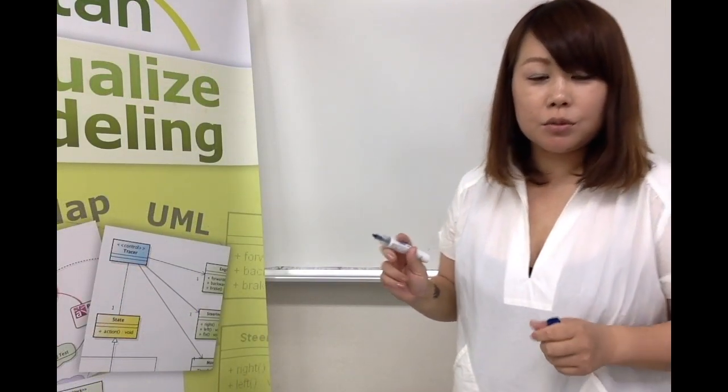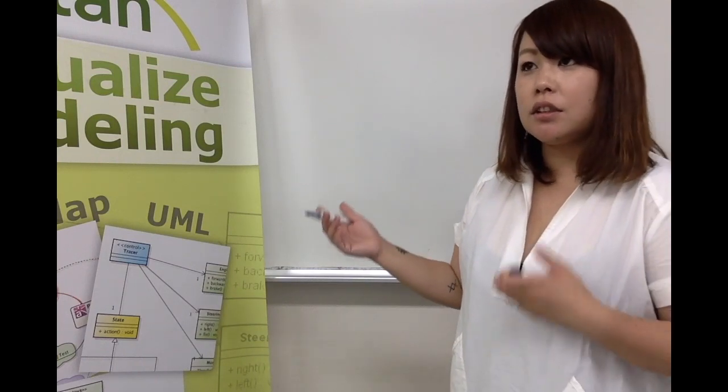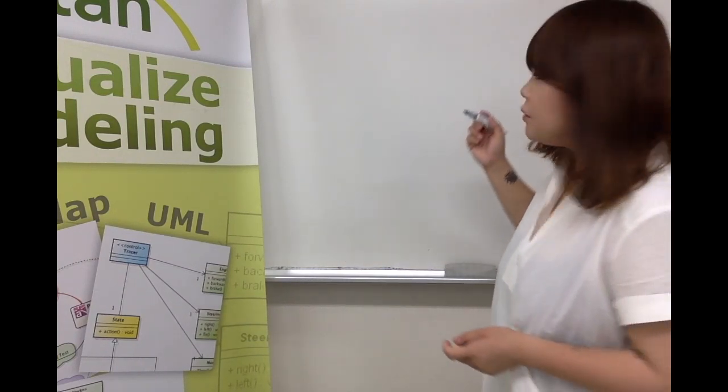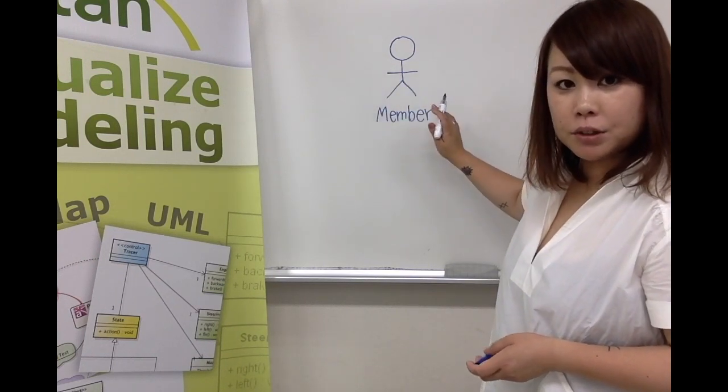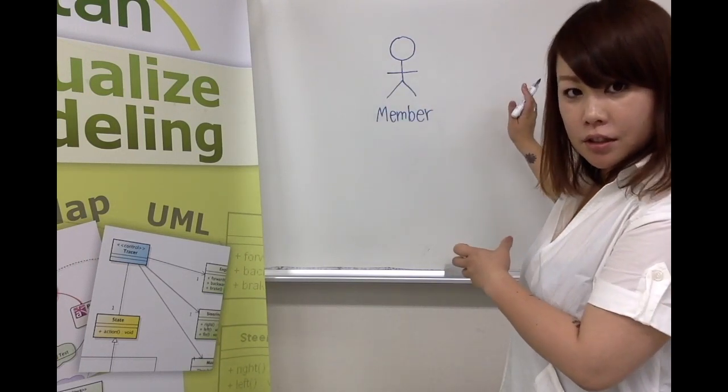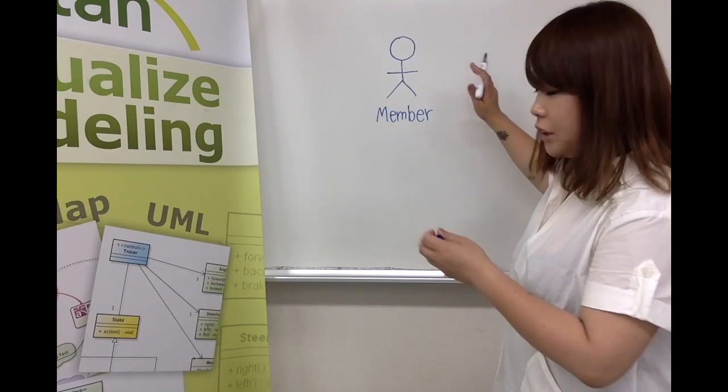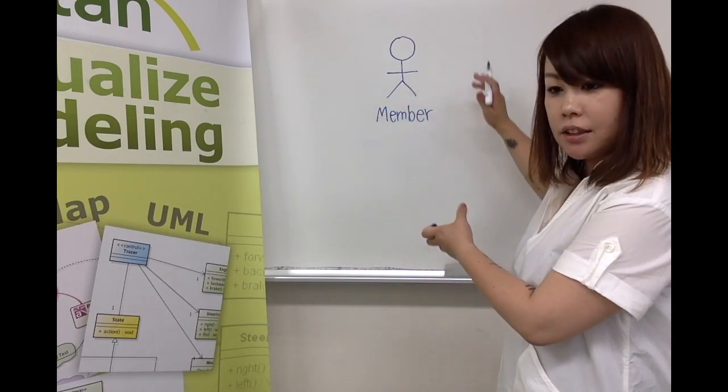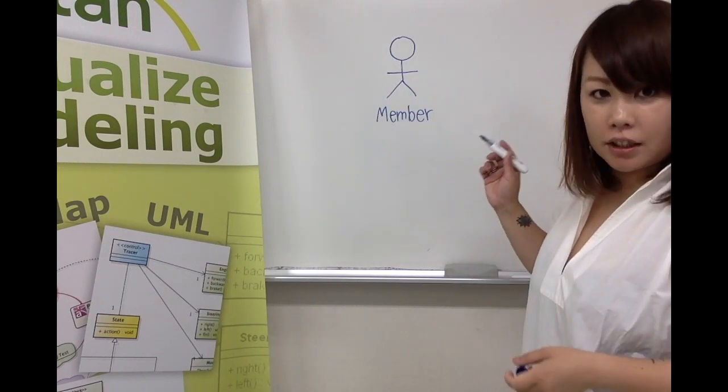Let me draw a sample diagram, which is a use case model that represents the DVD renting shop, for example. Here is an actor named member, which interacts with the system. And interactions and scenes which actors and system communicate to achieve a goal is called use case.